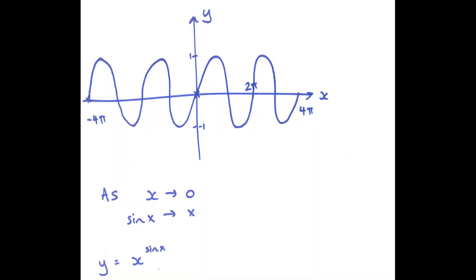So now we're going to move on to something slightly more challenging. I'd like you to draw me y equals x to the power of sine x, from a range of 0 to 4 pi. Because x to the sine x — okay, so close to 0, it would look like x to the x.